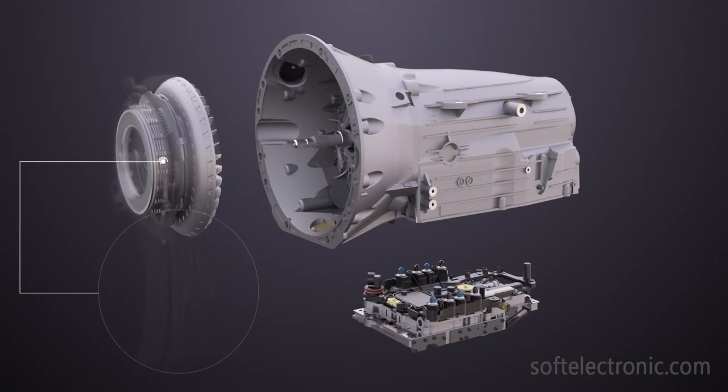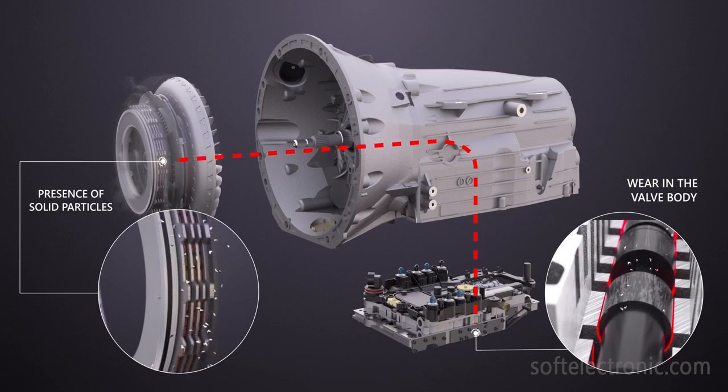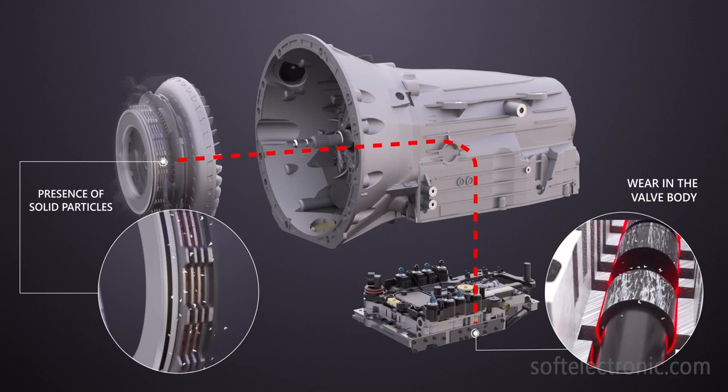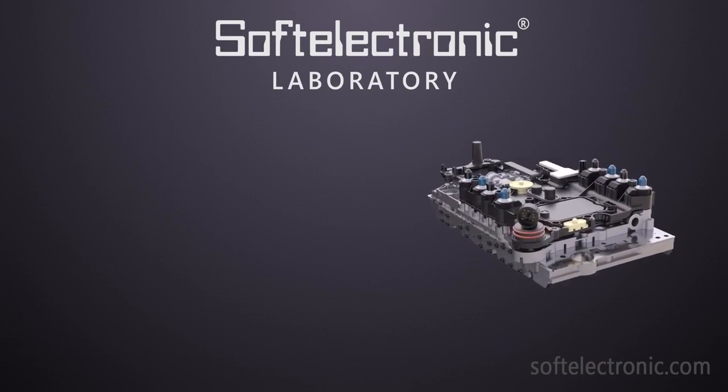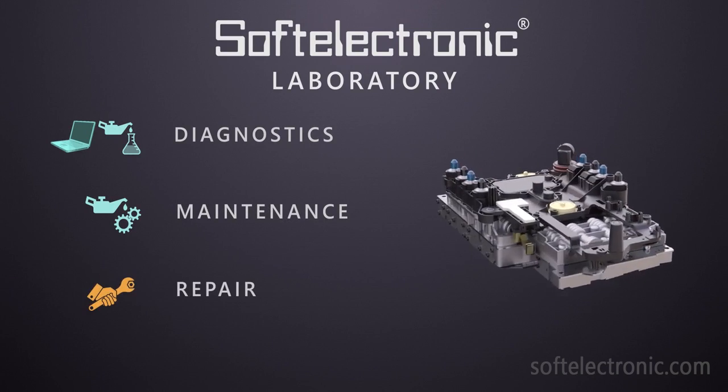Defects in the mechatronic can also appear due to a problem in the automatic transmission in general. Until that issue is resolved, the mechatronic will continue to break down. In the soft electronic workshop, vehicles can get proper diagnostics, maintenance and repair of the components in the mechatronic.